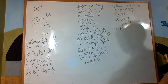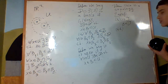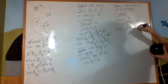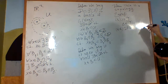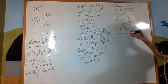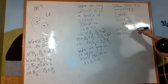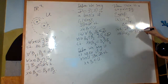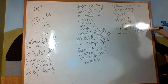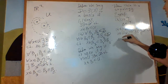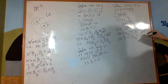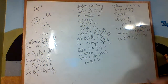Secondly, closed under arbitrary unions. What we do is: if x is an element of a union, then x is an element of a specific element U_{α₀}, which implies there exists B an element of the basis — by definition of openness — such that x is an element of B, which is a subset of U_{α₀}, which is a subset of the union of all the U_α.